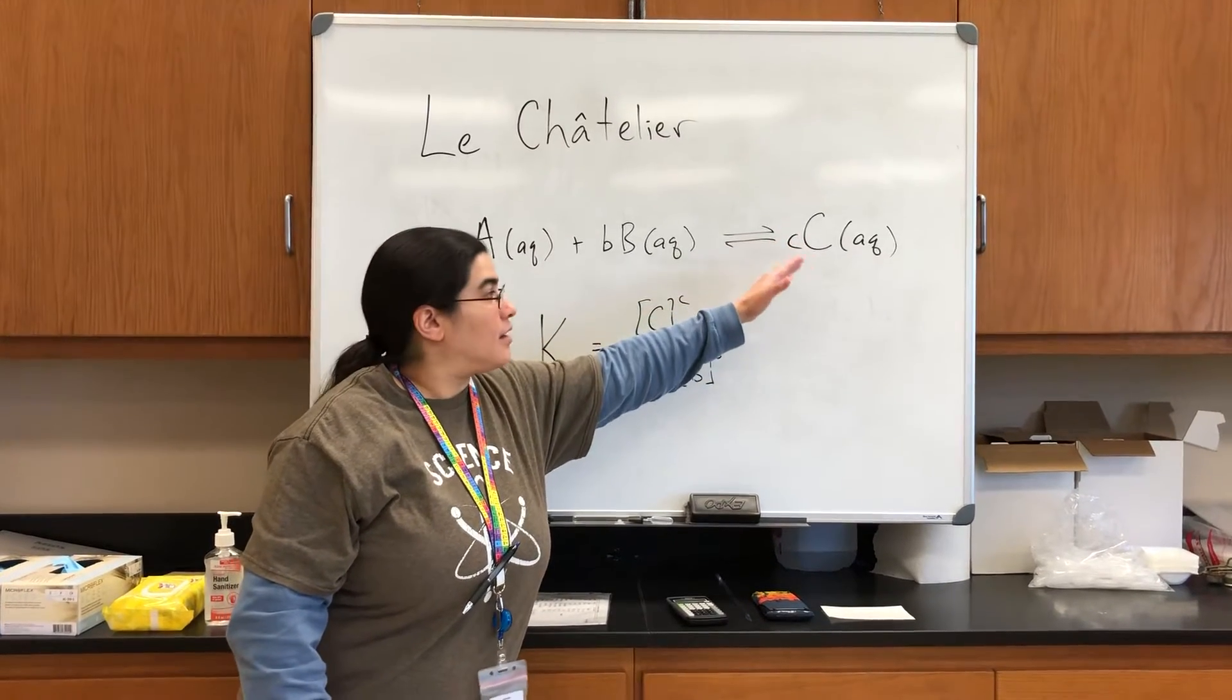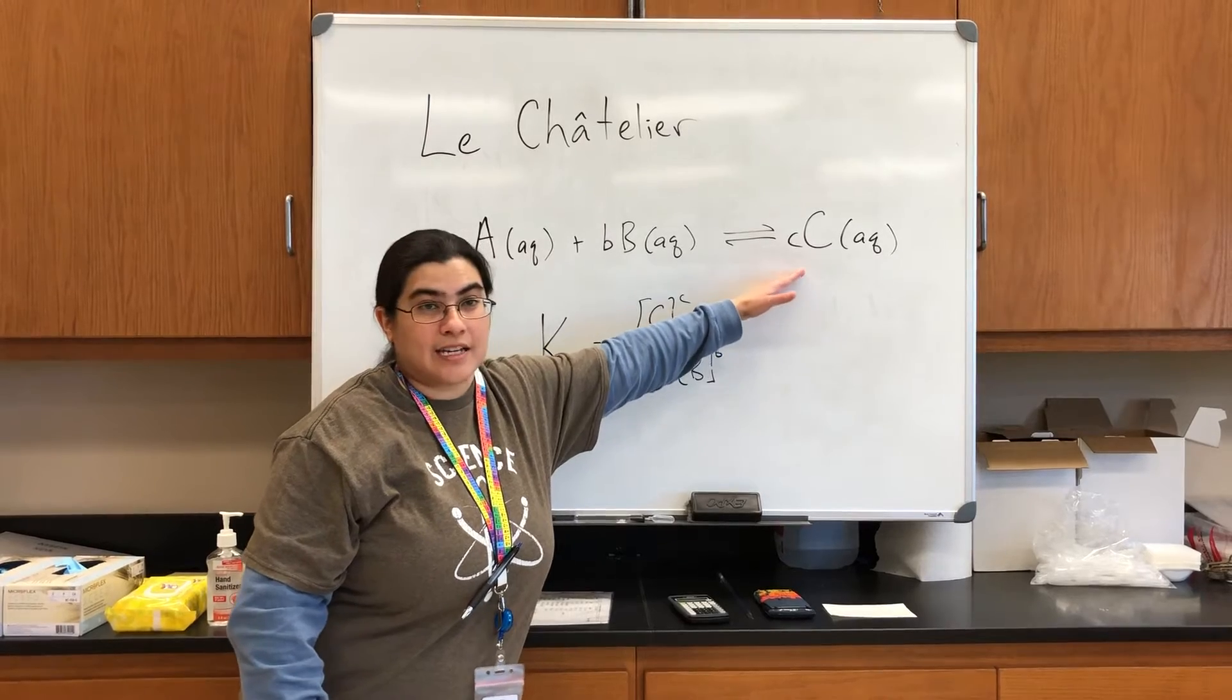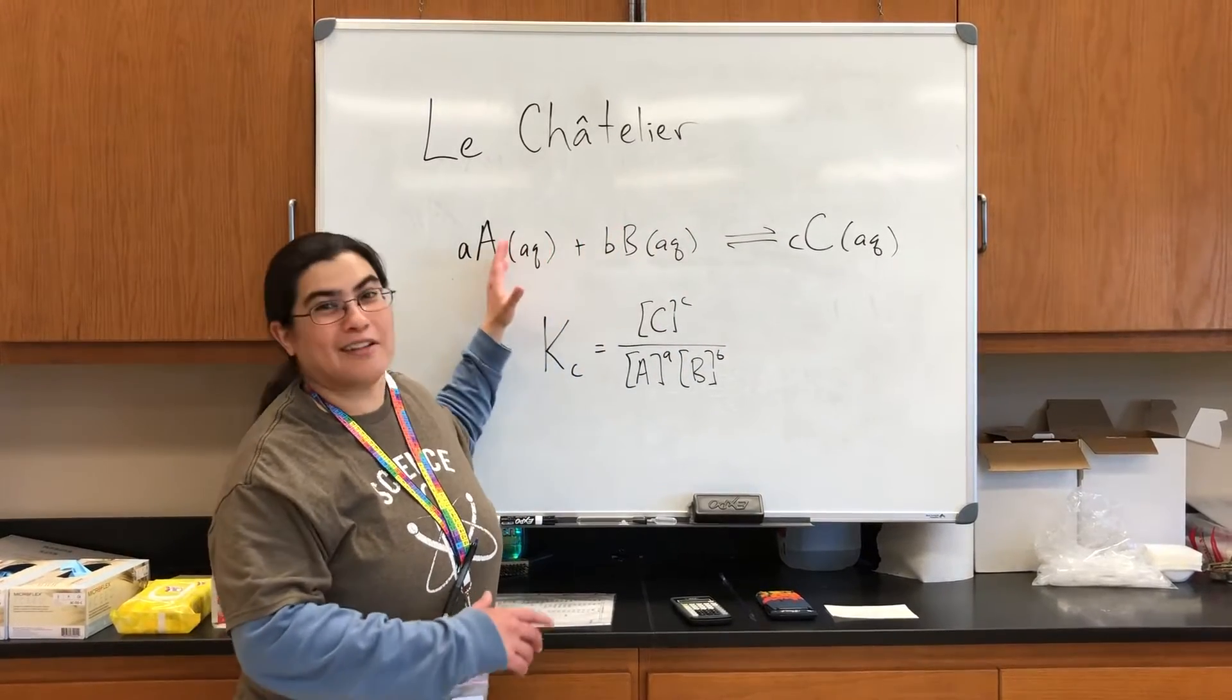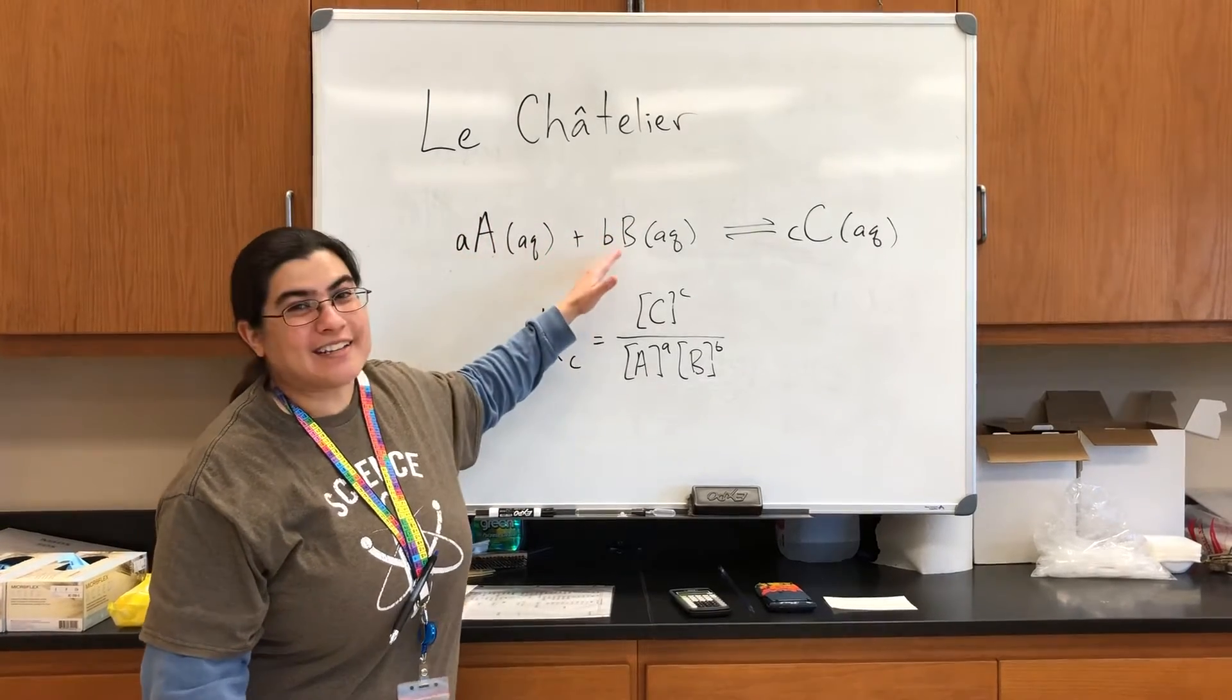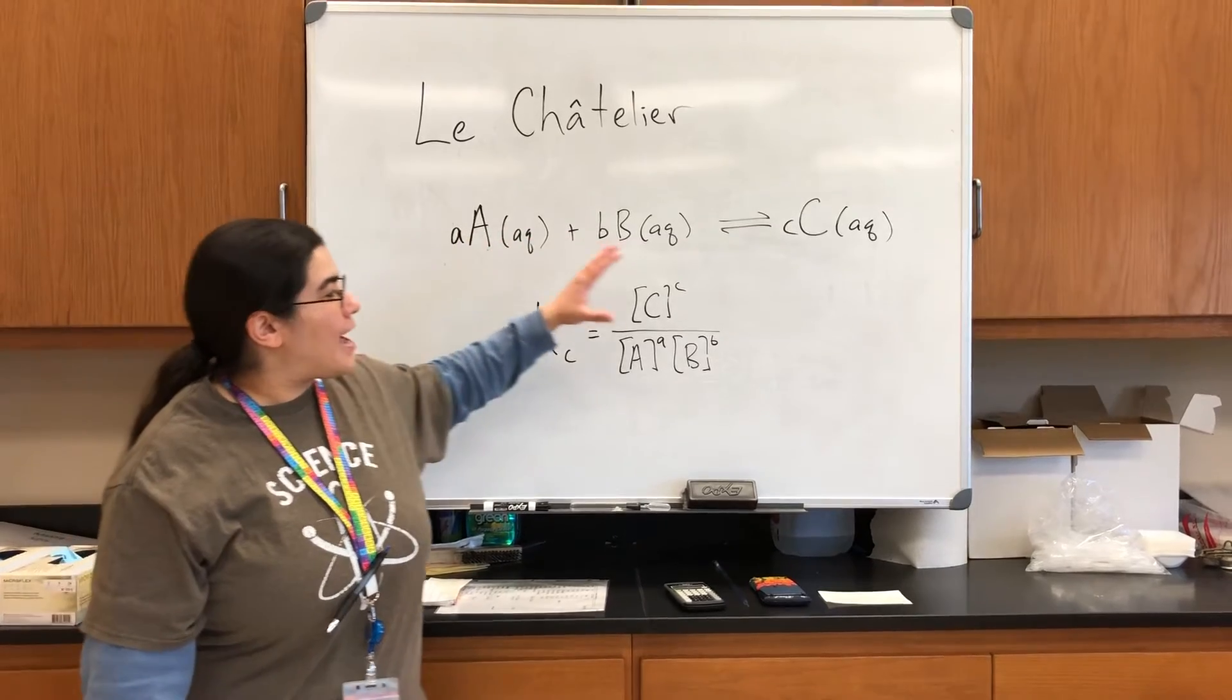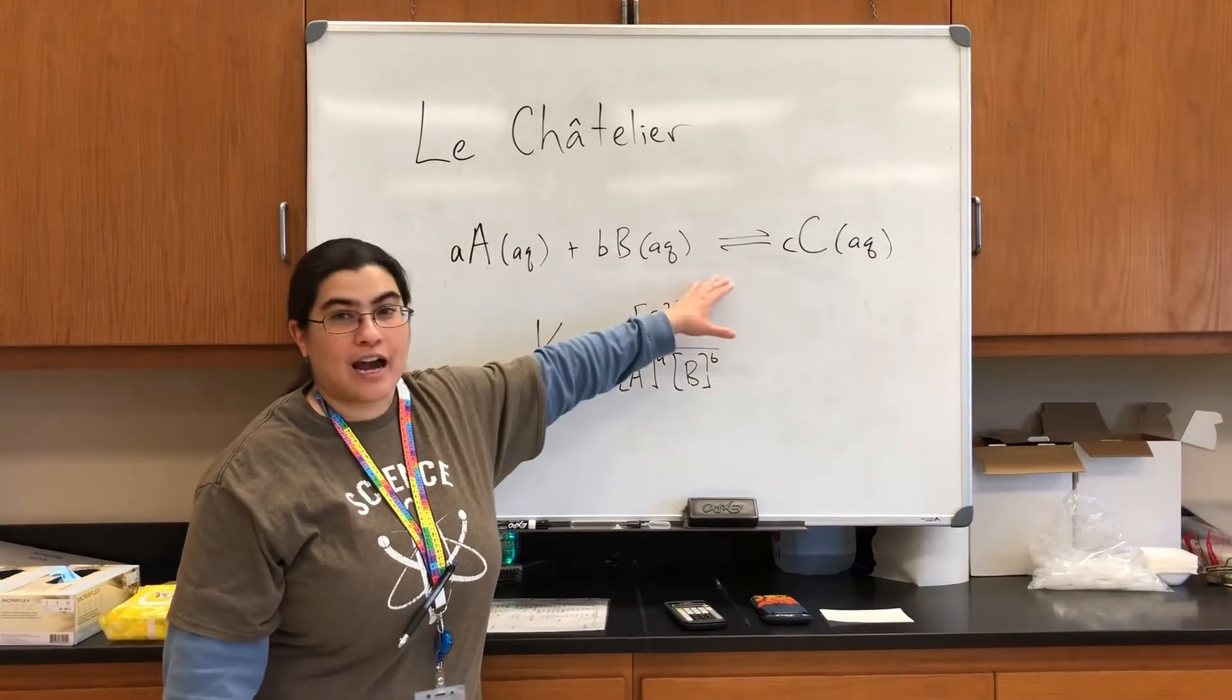Or likewise, if you were to add C, you're going to shift the equilibrium to the left to form more of your reactants A and B. And we can look at all of these and how they're related to each other via our equilibrium expression here.